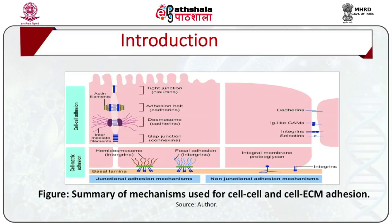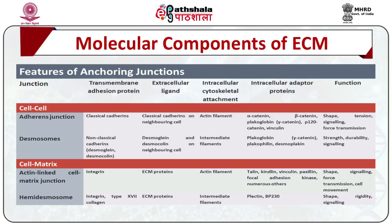A functional classification of cellular junctions can be presented as: occluding junctions which include tight junctions and septate junctions; anchoring junctions involving actin filament attachment sites, including cell-cell adherence junctions and cell-matrix focal junctions; and those including intermediate filament attachment sites, namely cell-cell desmosomes and cell-matrix hemidesmosomes.